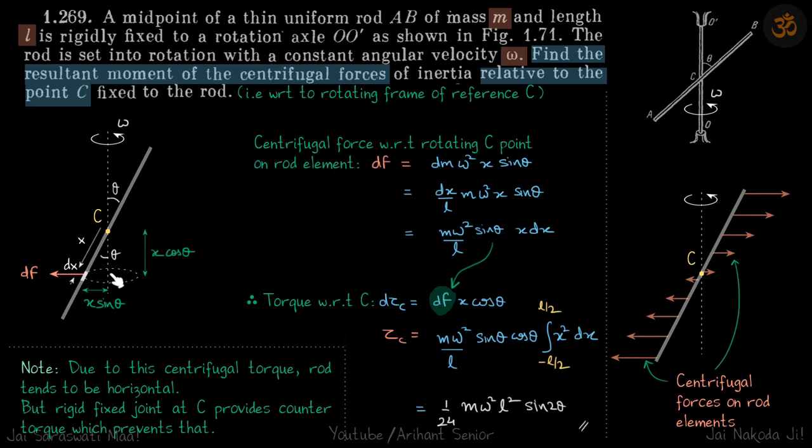The acceleration is omega squared r, and omega is constant for each point, but r is different, so centrifugal force on each element is going to be different. Let's take one element that is at a distance x with width dx, and let's calculate the centrifugal force and the torque because of that small centrifugal force. Then we'll integrate that torque to find the total torque.